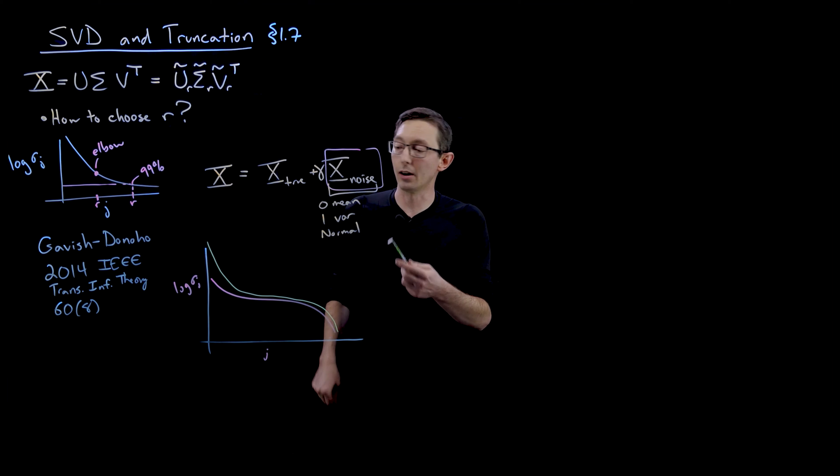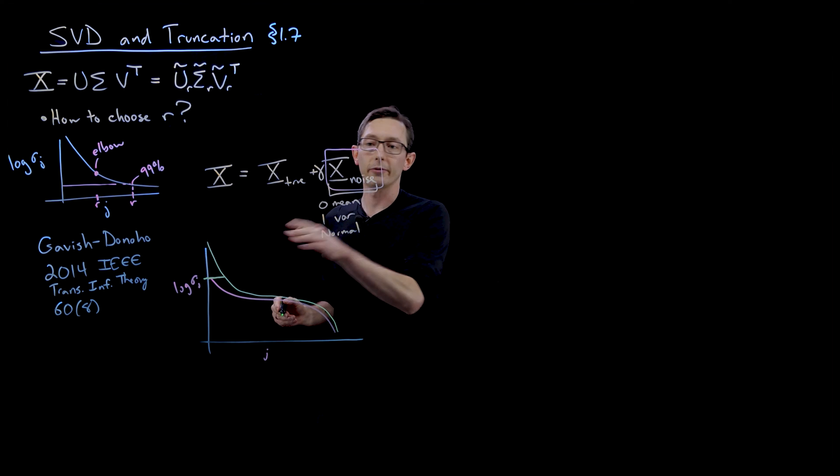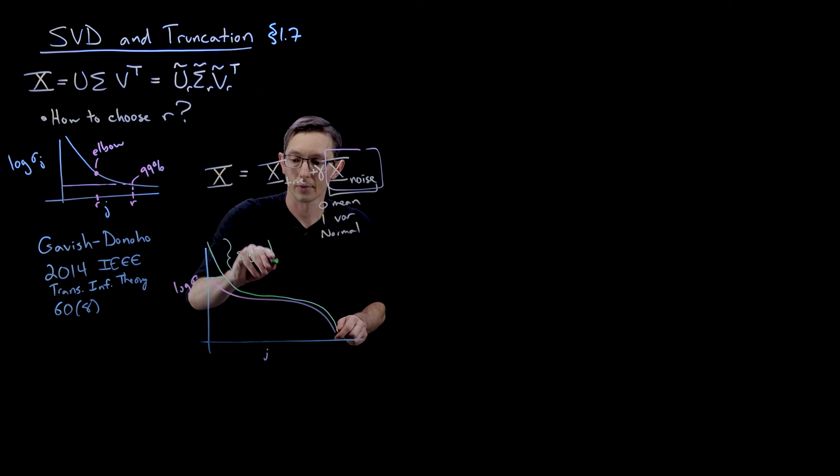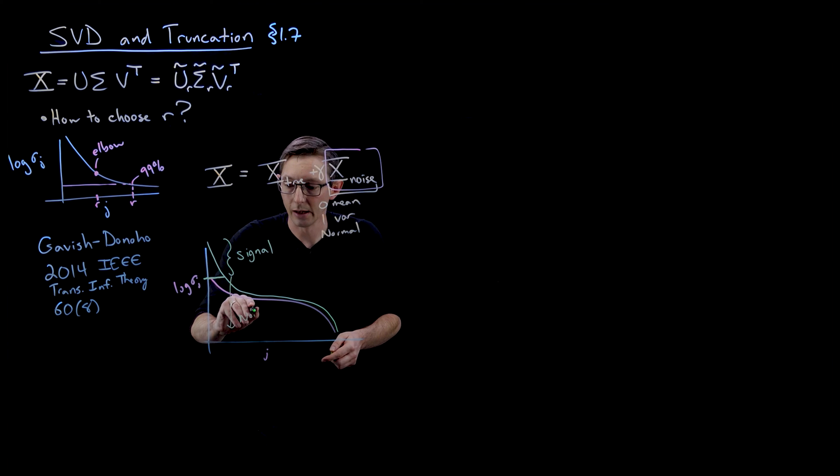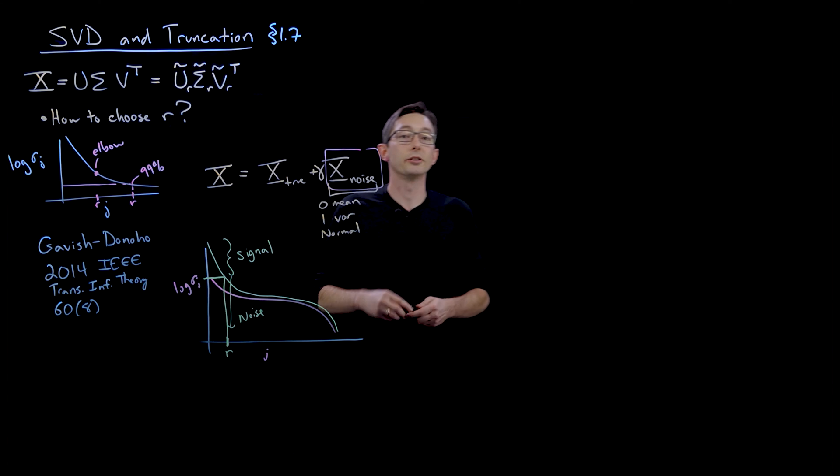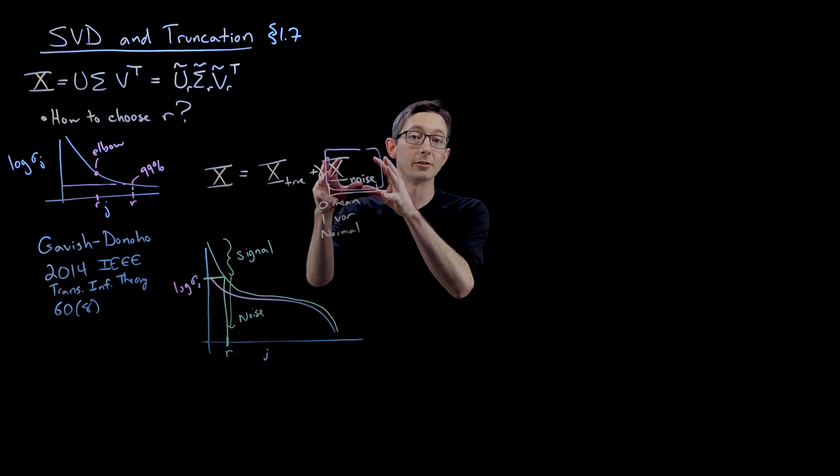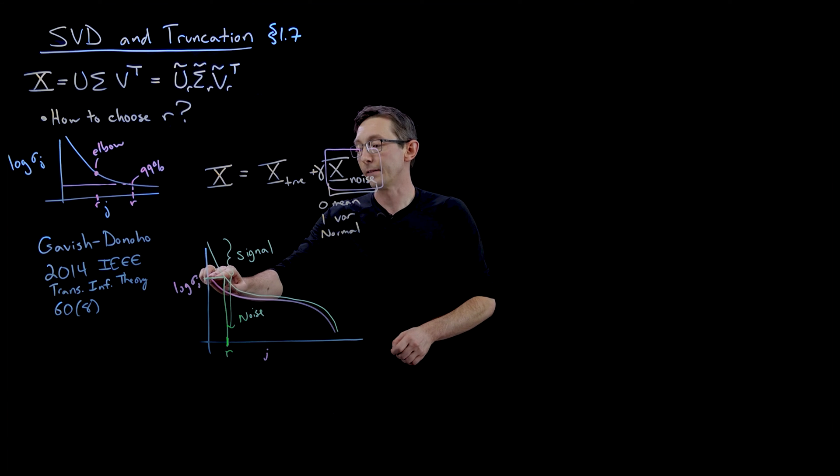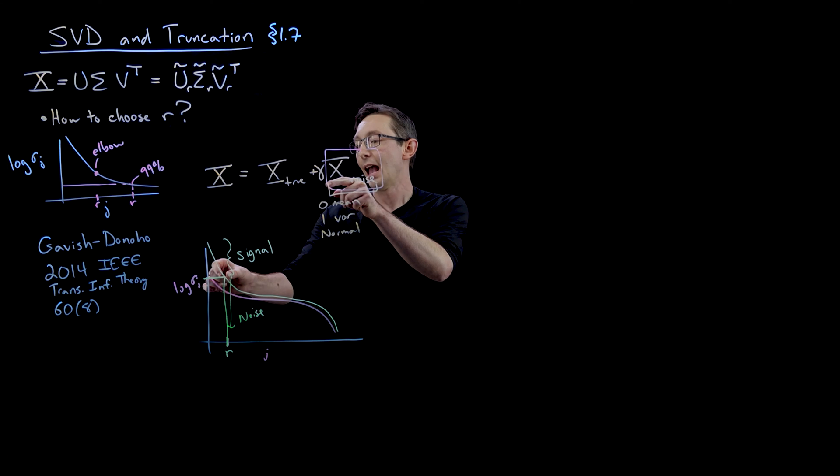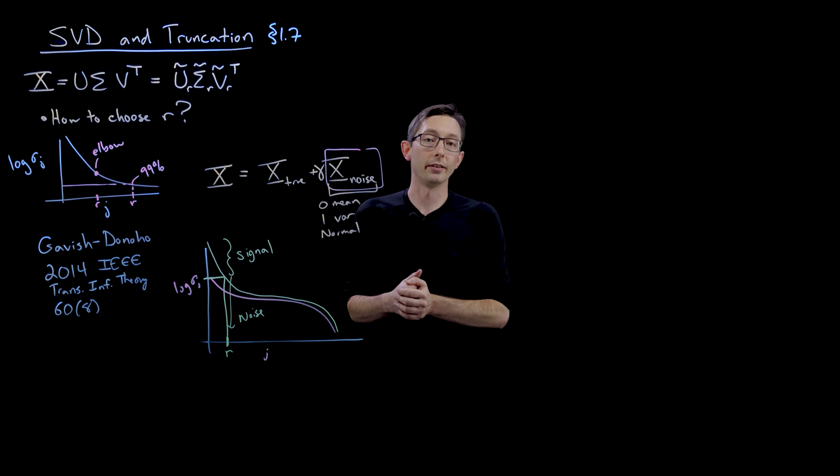And so what they essentially are doing is saying anything that is larger than the noise floor from the SVD of the noise matrix, everything above here is signal and everything below here is noise and should be truncated. And that's precisely how they find this optimal rank R to truncate the SVD.